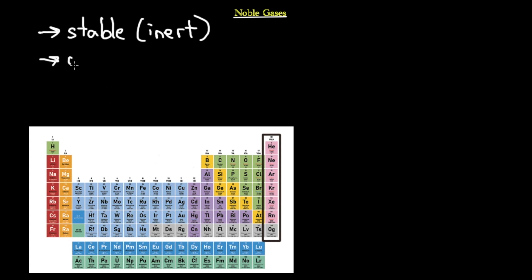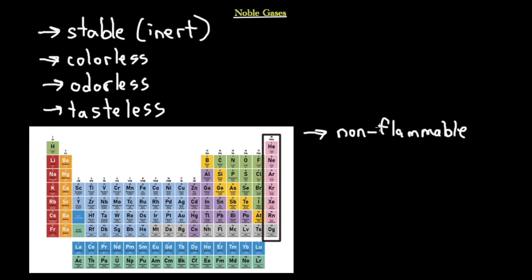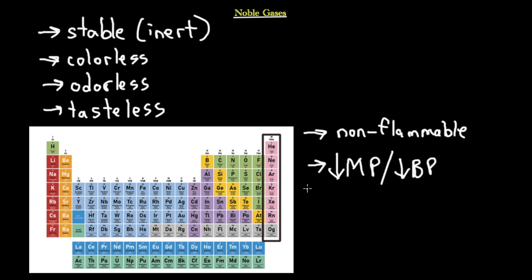Noble gases are colorless, odorless, and tasteless. They are non-flammable — you cannot light them on fire at regular temperatures and pressures. They also have low melting points and low boiling points compared to the other elements discussed. In general, these elements are simply unreactive and inert, and that is their special property.